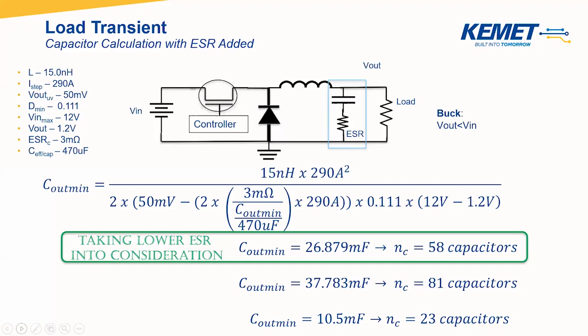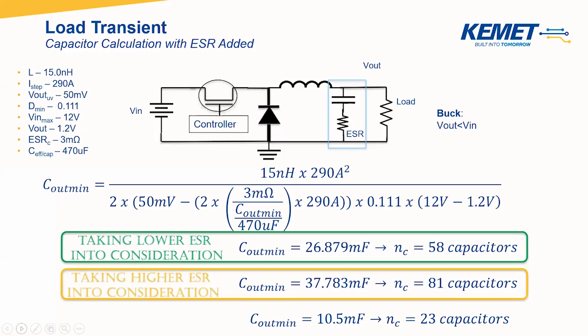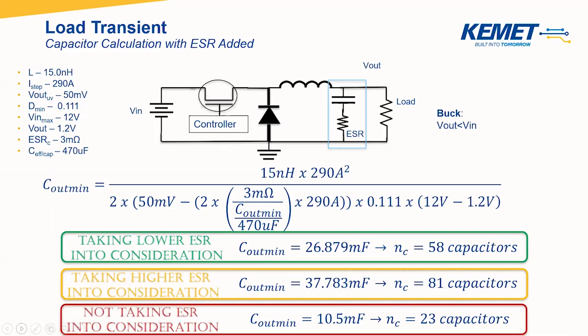With the lower 3 milliohm ESR, you need 58 total capacitors in parallel, compared to about 81 capacitors with the higher ESR requiring about 37.8 millifarads. Eliminating ESR completely, your output capacitance requirement drops to about 10.5 millifarads, and your total capacitor bank is only 23 capacitors. When calculating output capacitance required, it's important to consider ESR to get a more accurate depiction of your application and the impact your capacitor selection will have on transient response.